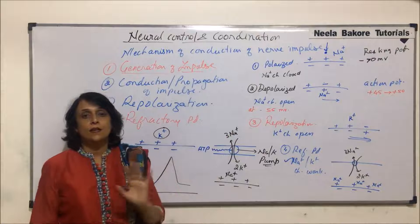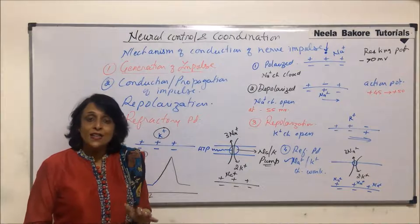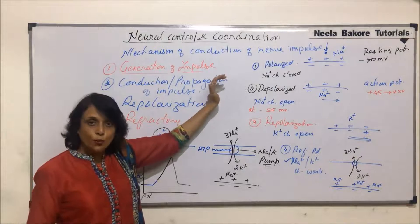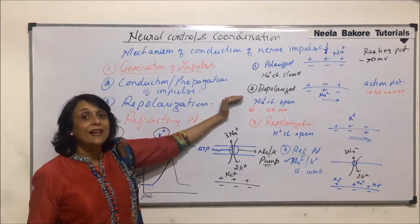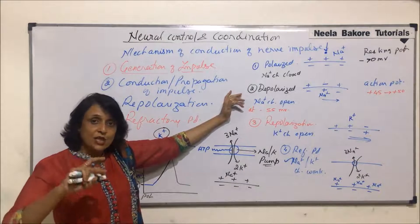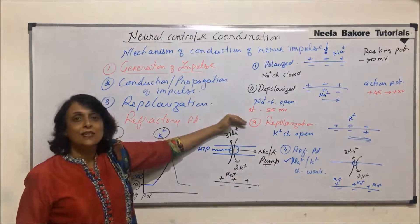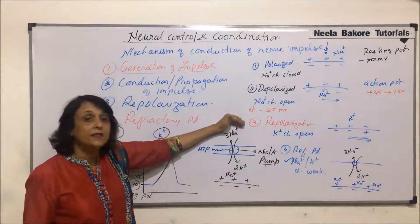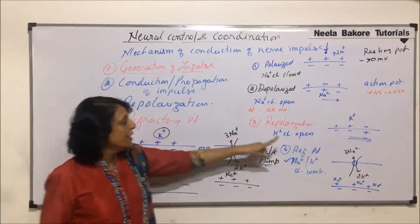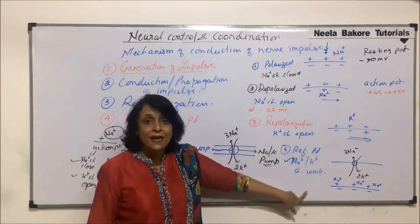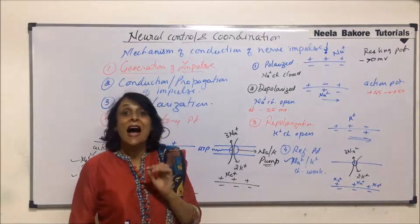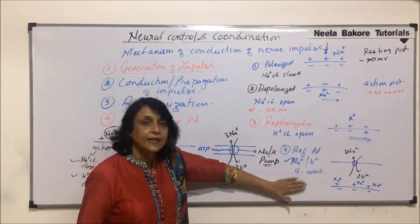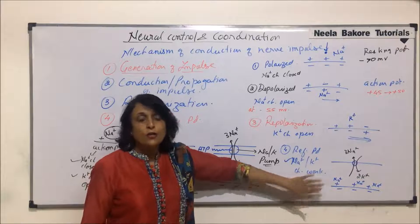This is the summary of conduction of nerve impulse. Normally it is polarized. Then it gets depolarized — the charges are reversed. Then the charges become the same again, electropositive outside and negative inside — that is repolarization. But there has to be a correction made in the distribution of the ions responsible for these charges. That is done in the refractory period. This is how the nerve impulse is generated and conducted on the nerve fiber.